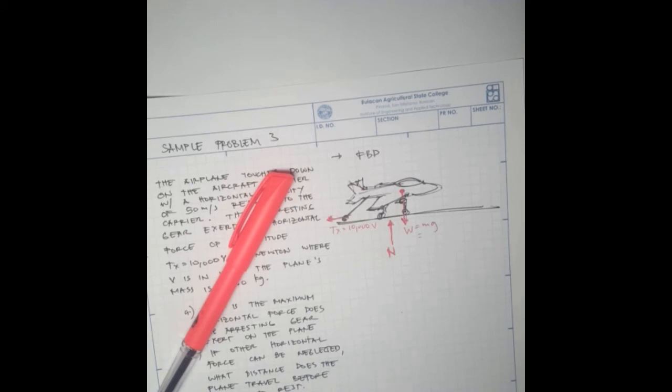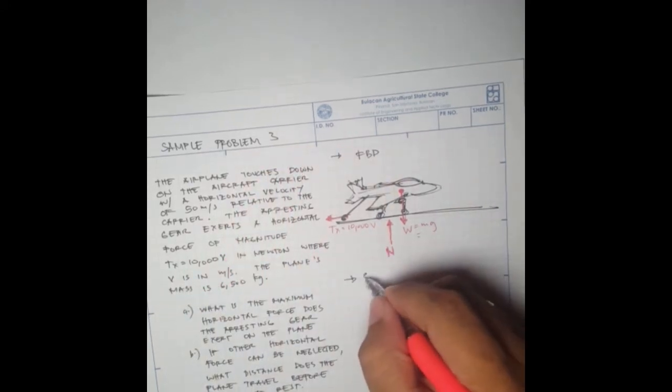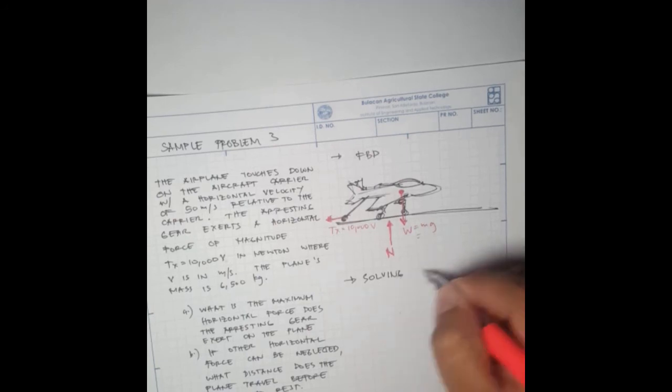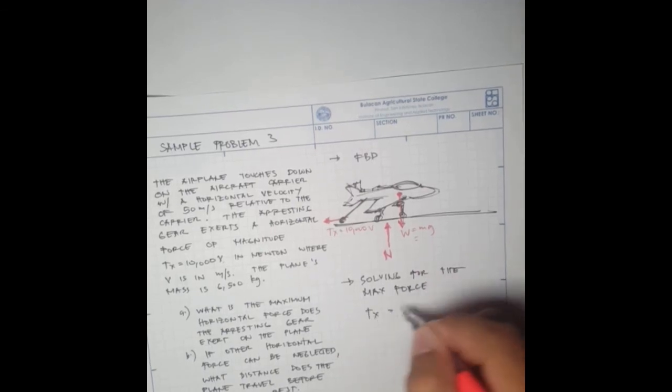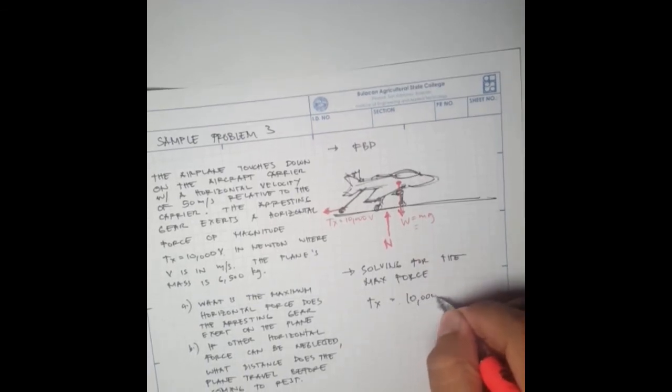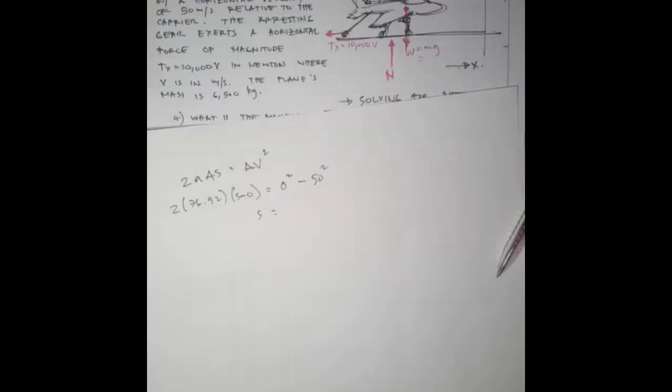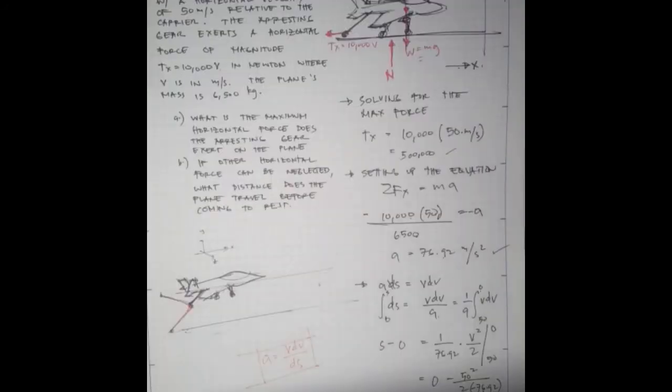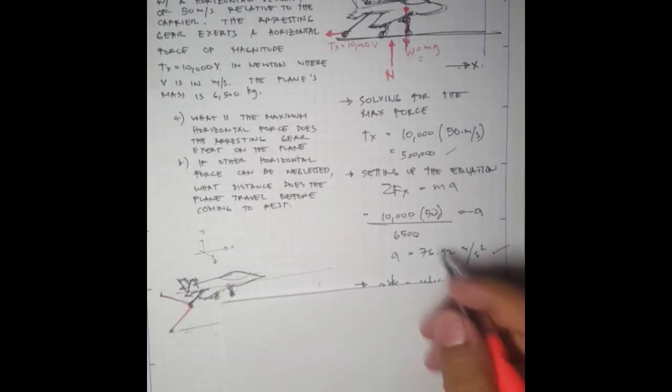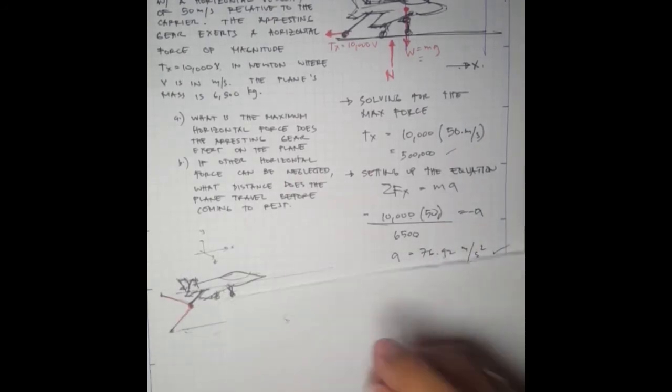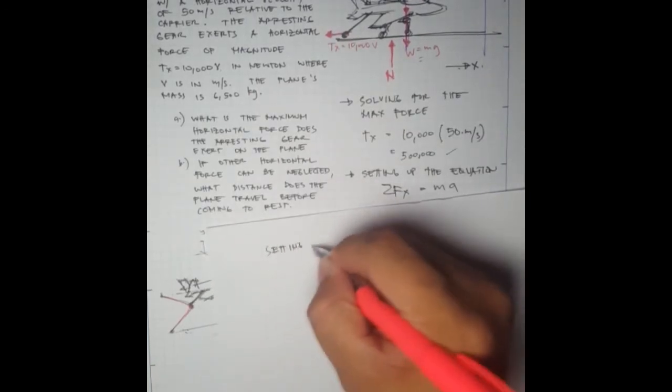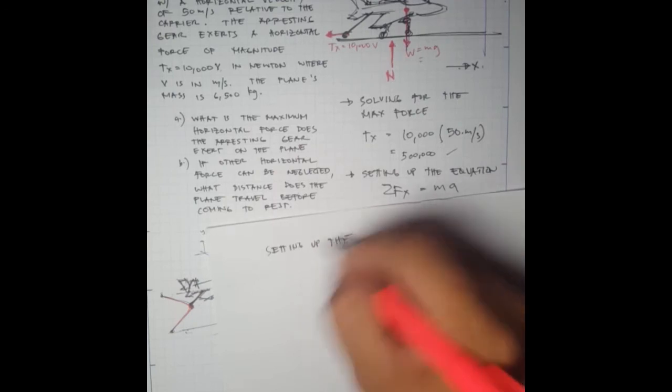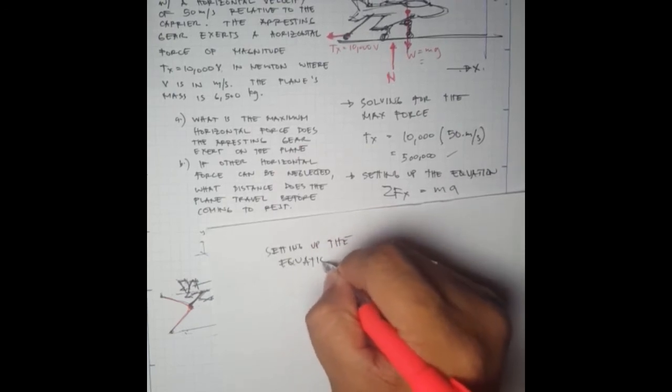We're good to go. Solving for the max force, we have Tx equals 10,000 times the velocity. Let's set up the equation.